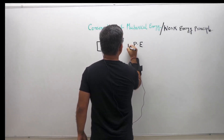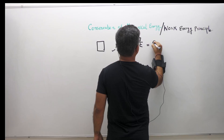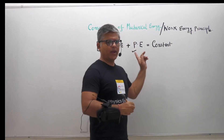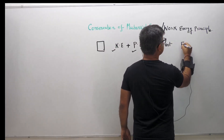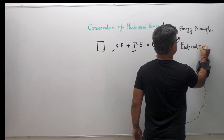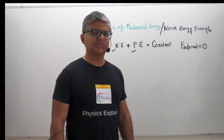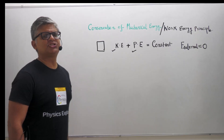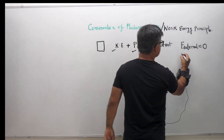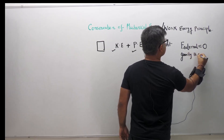So KE plus PE is equal to constant, provided when external force is equal to zero. When the external force is zero, this situation stands true. Gravity is the only external force which is active.